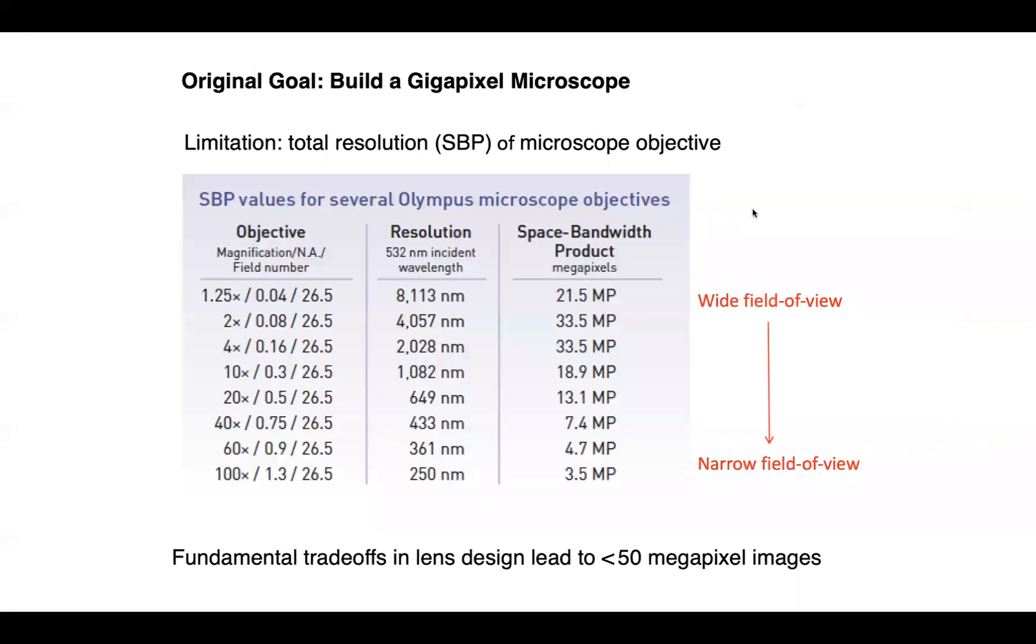This technique is 10 years old now and it's based on the insight that there are no gigapixel microscopes. Shown here is a table of standard microscope objective lenses and their total number of resolved pixels or space bandwidth product. Standard objective lenses generally capture tens of megapixels per snapshot. When we first set out to develop Fourier ptychography, our goal was to create a microscope that can capture a hundred times more than that or a billion pixels.